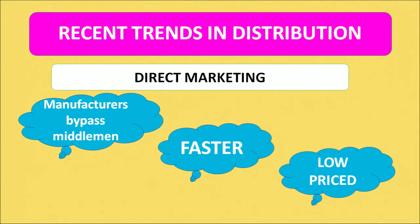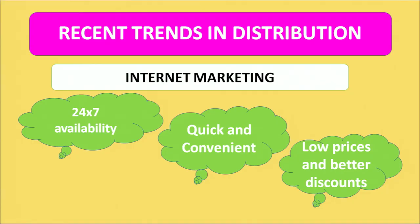Recent trends in distribution include three major trends: direct marketing, internet marketing, and telemarketing. Direct marketing is an attempt by the manufacturer to bypass all middlemen from the chain of distribution, making delivery faster and passing profit margins on to consumers as lower prices. Internet marketing is an iteration of direct marketing, available 24/7, quick and convenient, again providing products at lower prices and better discounts by removing middlemen.